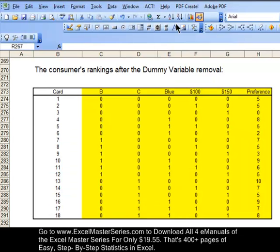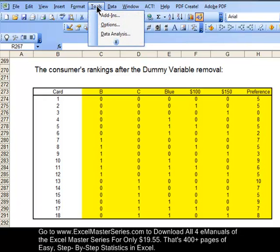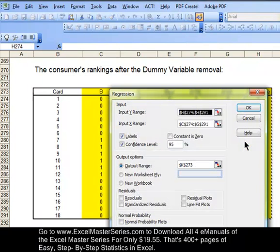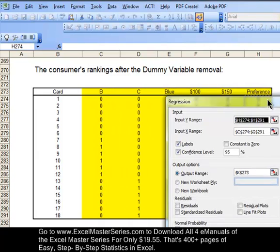The sixth step is to run the regression. There's the output right there. Let's run the regression in Excel 2003. Tools, hit Data Analysis, and then select Regression right there. And here's the Regression dialog box. Let's move that out of the way so we can take a closer look at it.